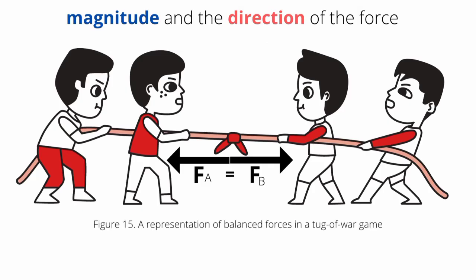To describe a force, you must know two things. You must know the magnitude and the direction of the force. Suppose two teams are playing tug-of-war as shown in figure 15. Each team is pulling with equal magnitude of force, F-A and F-B, on the rope but in opposite directions. Neither team can make the other team move.